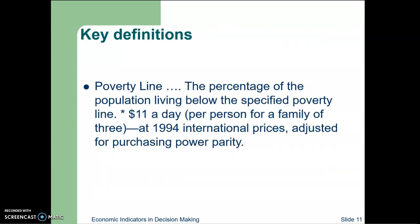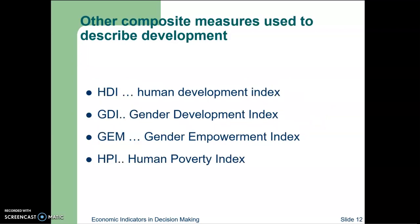A poverty line is defined as the percentage of the population living below a specified threshold — for example, one dollar a day per person for a family of three, in 1994 international prices adjusted for purchasing power parity. We also have several composite indices: the Human Development Index (HDI), Gender Development Index (GDI), Gender Empowerment Index (GEM), and Human Poverty Index (HPI).